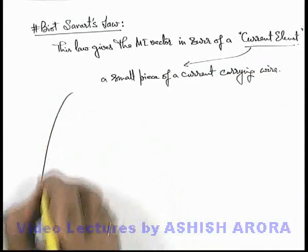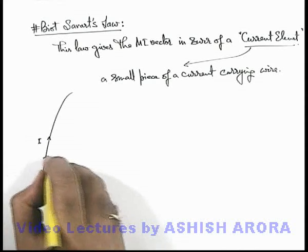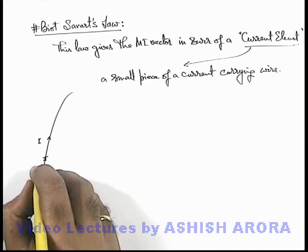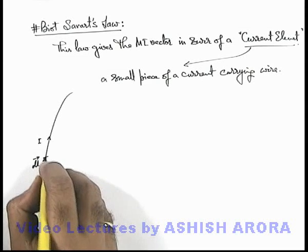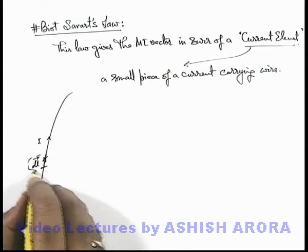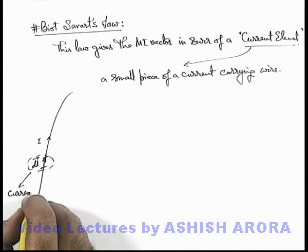Like say if we are given with a wire carrying a current i, if we consider a small element of length dl in it, say this is the direction of dl vector along the direction of current, then this small element which is carrying a current we can term as current element.